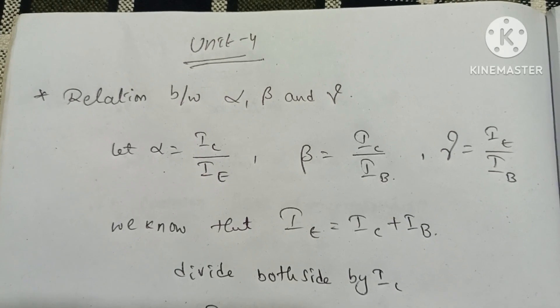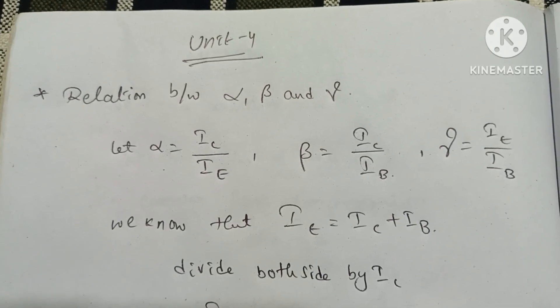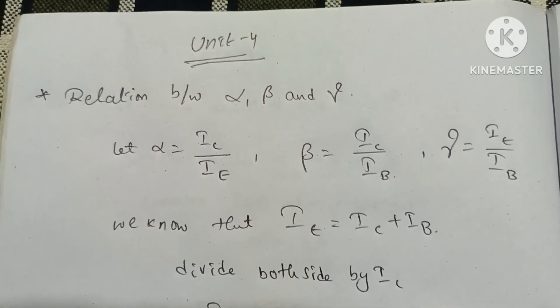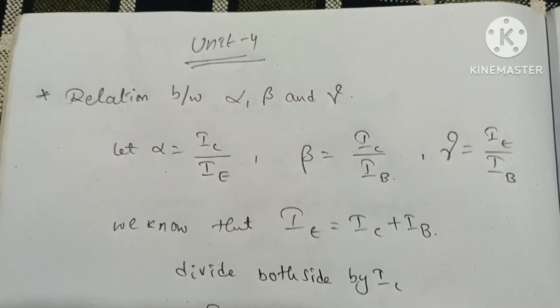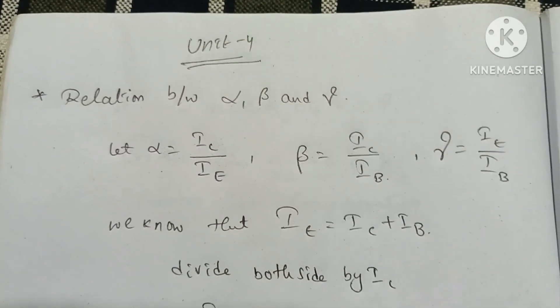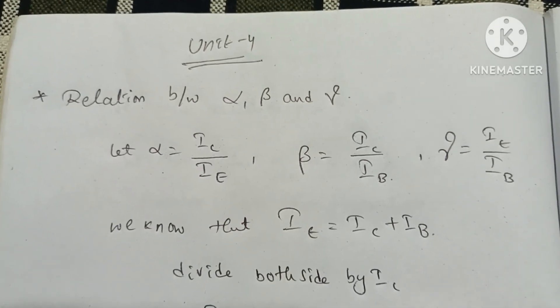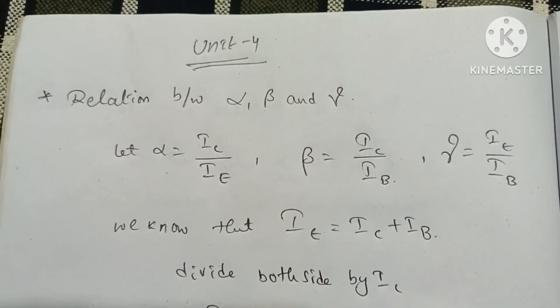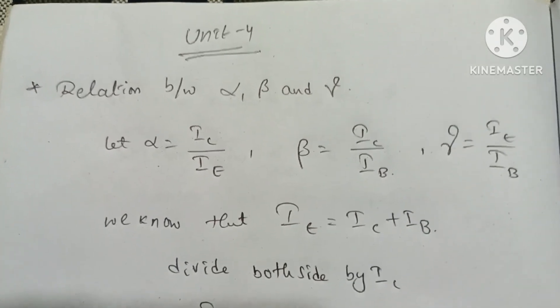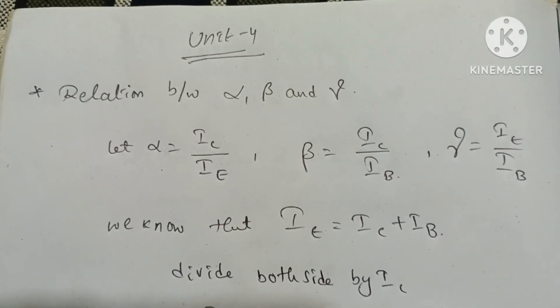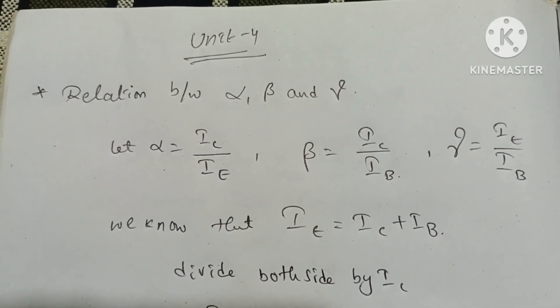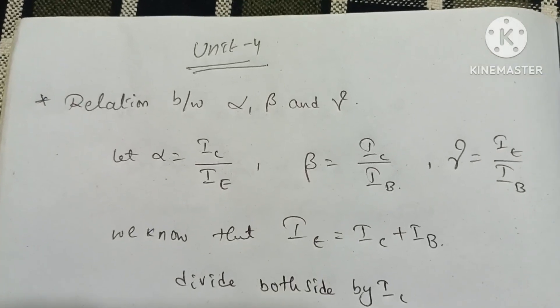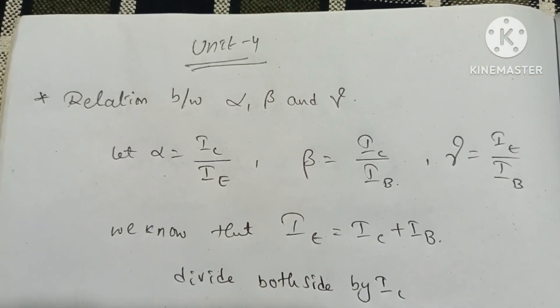In this video, we discuss 4th semester physics unit 4 very important questions. The examination question is: deduce the relationship between alpha, beta, and gamma.